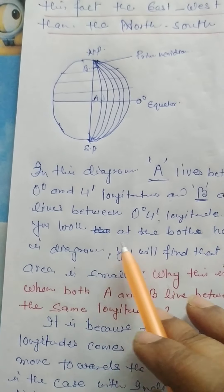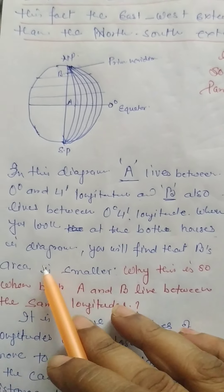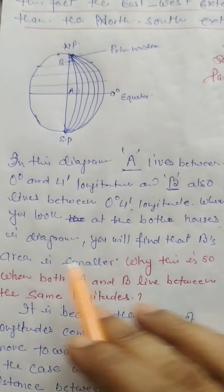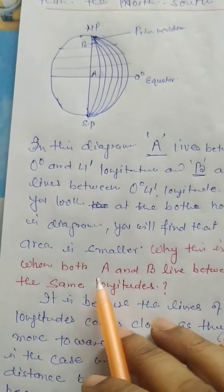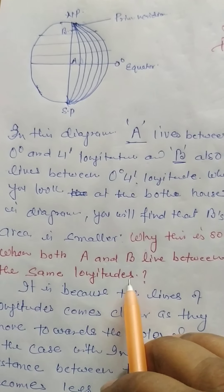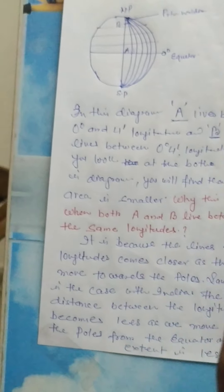When you look at both houses in the diagram, you will find that this area is smaller. Why is this so when both A and B live at the same longitude? What is the reason?